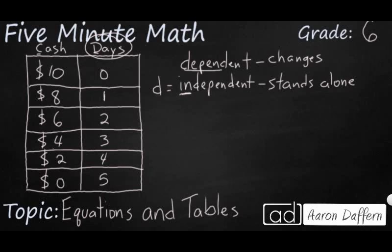And then our dependent variable, the amount of money he has, changes based on how many days it's been. At four days he only had two dollars left, but at one day he had eight dollars left. So that is going to be represented by C for cash. So how can we write an equation to represent the relationship between the number of days, our independent variable, and how much cash he has?